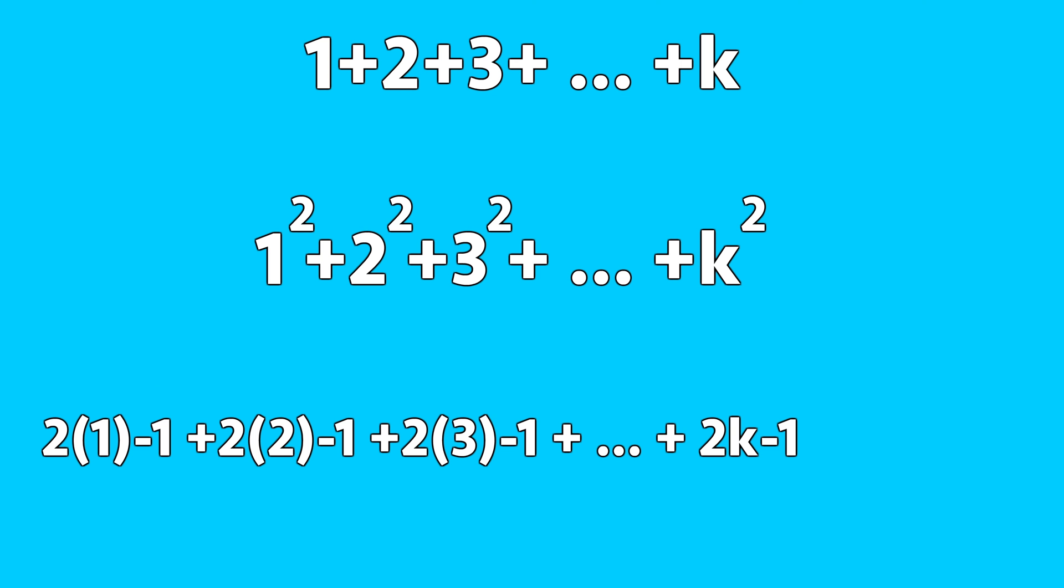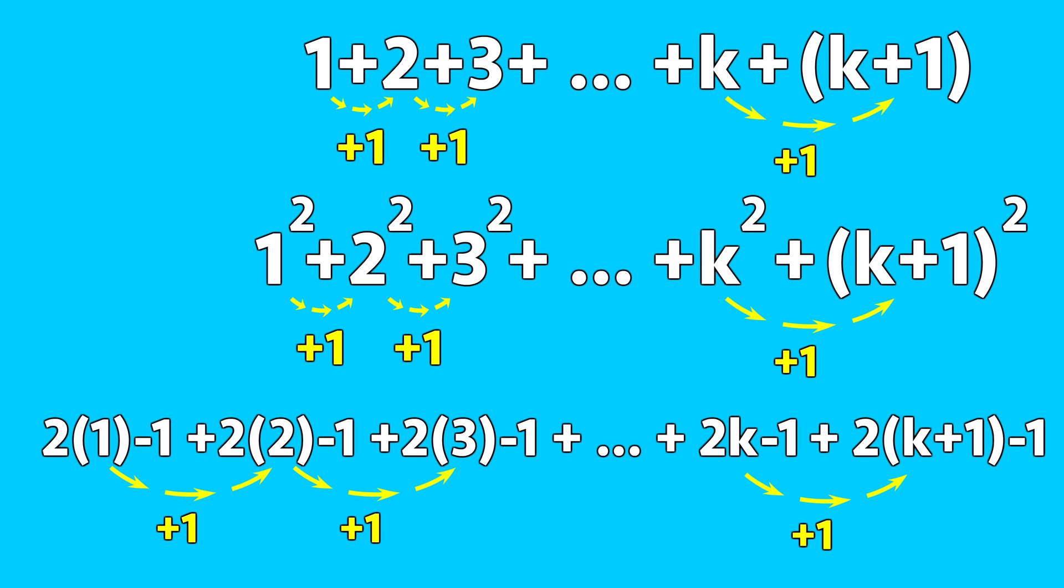Let's take a look back at the three different series. Observe that as we progress to each subsequent term, one is added not to the overall term, but to the term number. The last term in the series includes k, but if we wanted to extend the series, the next term needs to have k plus 1.